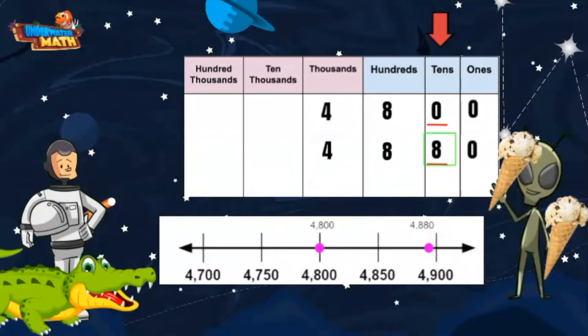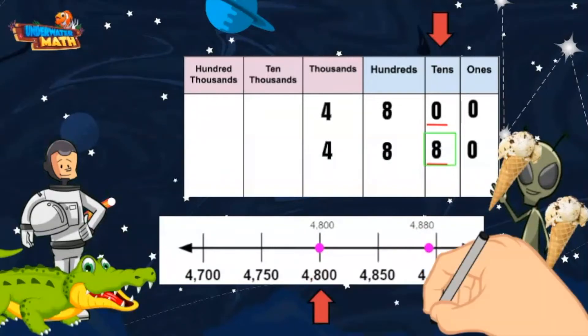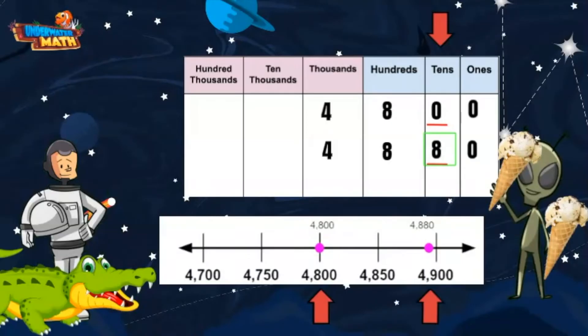You can also plot both points on a number line to help you make the comparison. I plotted 4,800 on the exact value and then there's 4,880 closer to 4,900. You can see 4,880 is closer to 4,900, so it is greater.